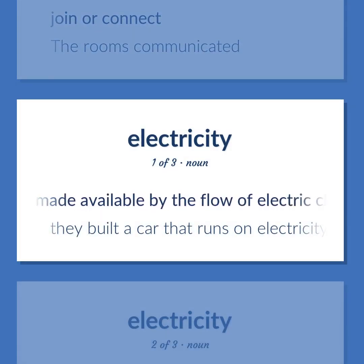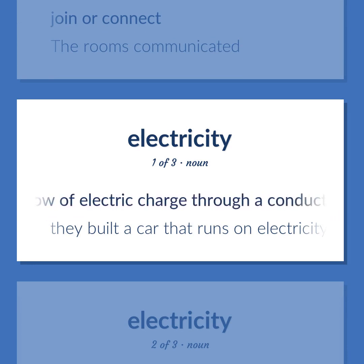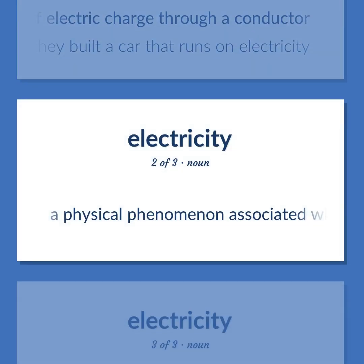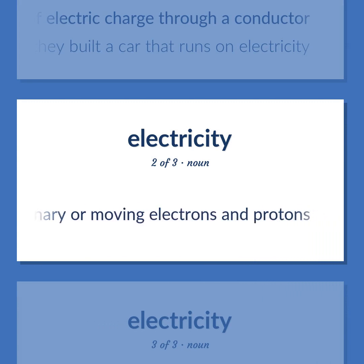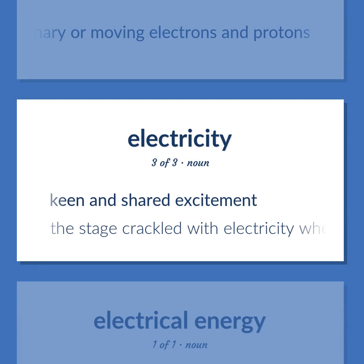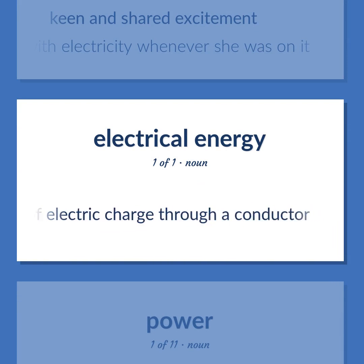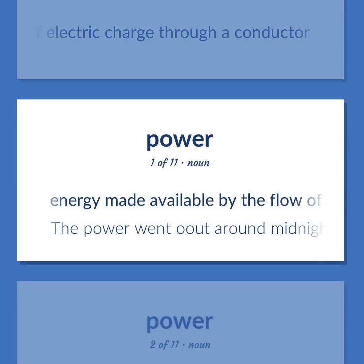Electricity: Energy made available by the flow of electric charge through a conductor. Example: They built a car that runs on electricity. A physical phenomenon associated with stationary or moving electrons and protons. Keen and shared excitement. Example: The stage crackled with electricity whenever she was on it.